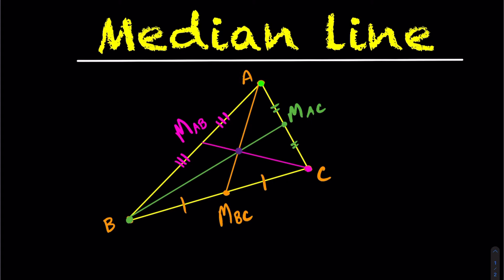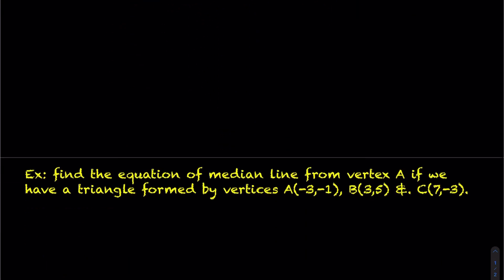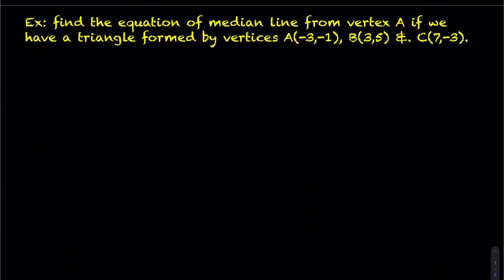You have median line A that goes from the vertice A to the opposite side at the midpoint. Median line B goes from vertice B to the opposite side at its midpoint. And then median line C goes from vertice C to the opposite side, and in this case, the midpoint of AB. Okay, let's take a look at an example here, actually calculating a median line.